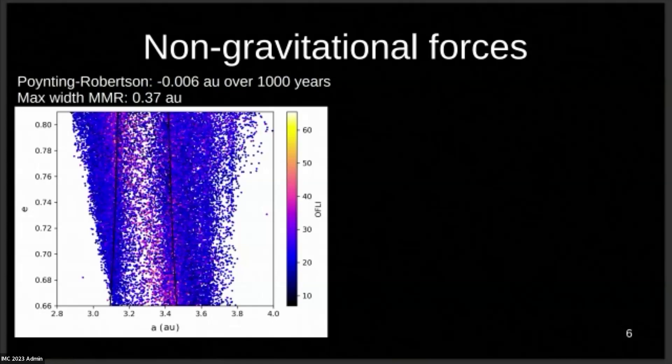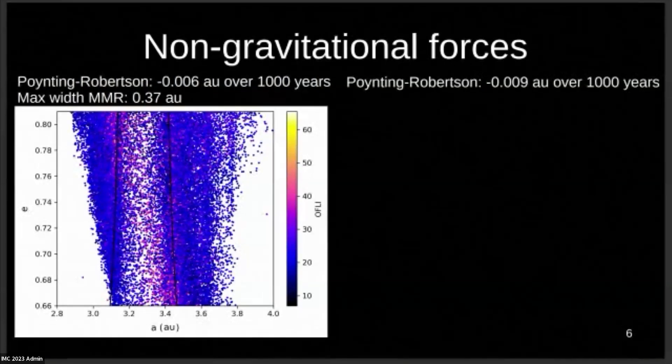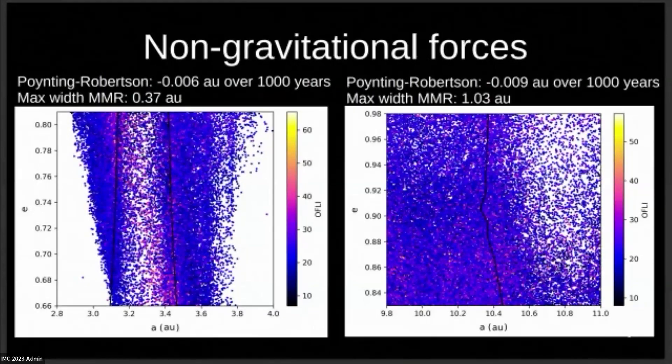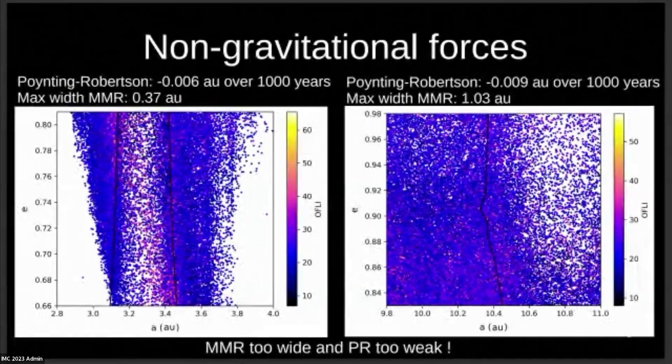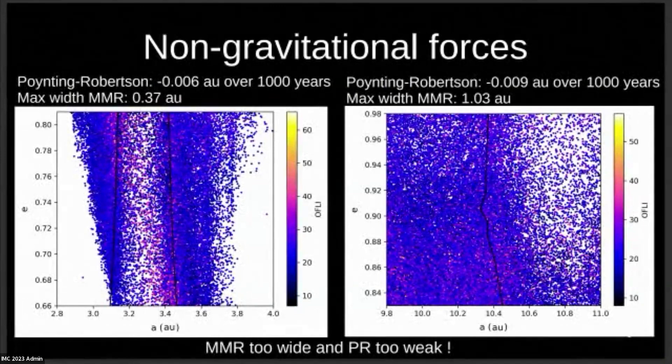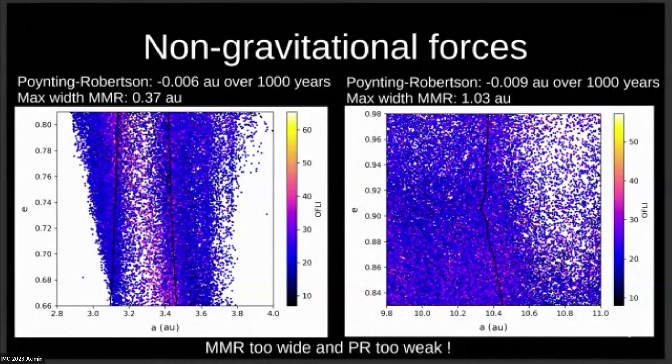If you take a look at the Leonids, you actually have very similar results. Poynting-Robertson is about the same effect. And for the MMR, it actually is so big that on this map I was only able to plot the left border, while the right border is at the outside of the map. It's actually 1.03 astronomical units wide, so it's very, very wide. So we have a combination for the Draconids and Leonids of an MMR that's very wide, and Poynting-Robertson which is not very strong. So they can't escape the MMRs, and that's why the maps are so similar.